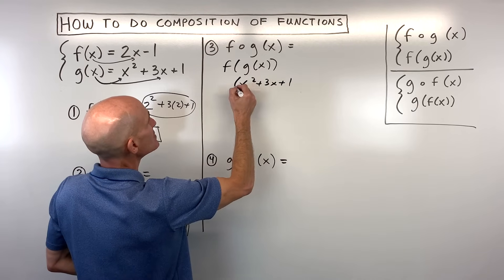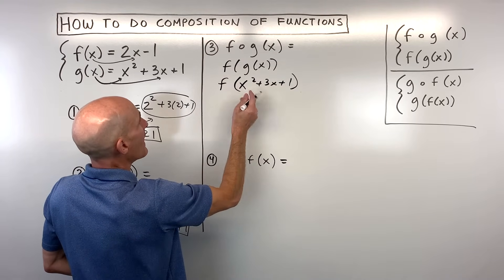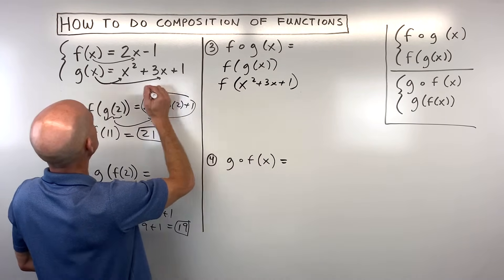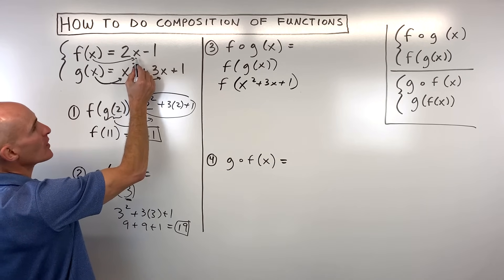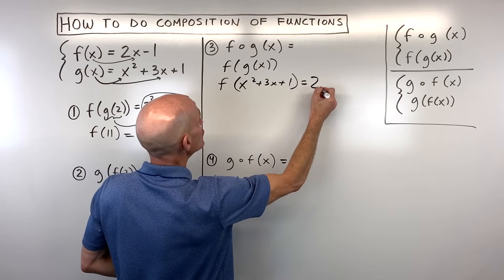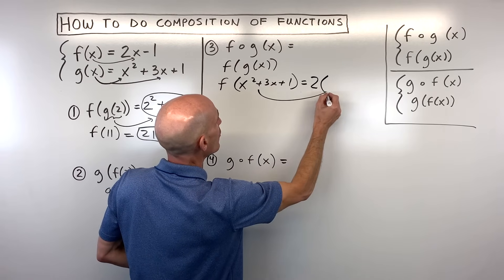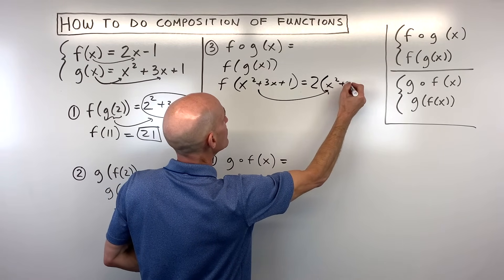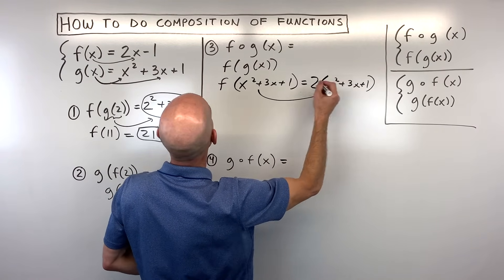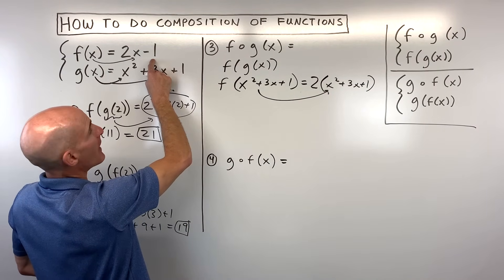So let's put that in place of g of x and now whatever's inside the parentheses here just like we said that's going to go in for x on the right side of the equation. So this is actually equal to 2 times this whole quantity x squared plus 3x plus 1 minus 1.